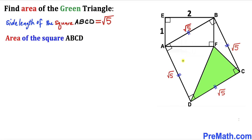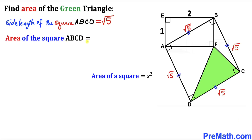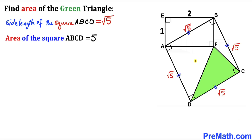Let's calculate the area of square ABCD. Recalling the area of a square formula: area equals S squared, where S is the side length. In our case the side length is √5, so the area of square ABCD is (√5)², and the square root and square undo each other, giving us simply 5. So the area of square ABCD is 5 — let's call this equation 1.